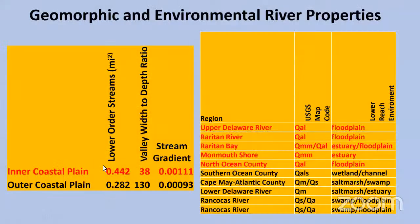If you look at the lower order streams — in other words, all the little tributaries that go into a stream — and you look at it in every square mile, the number of these small streams per square mile, you can see that the intercoastal plain has more streams per mile than the outer coastal plain does.